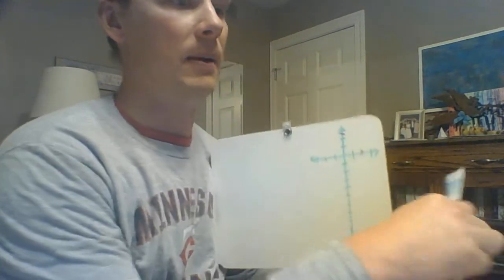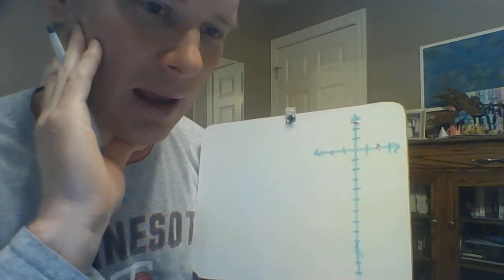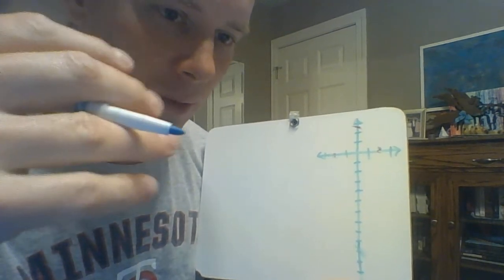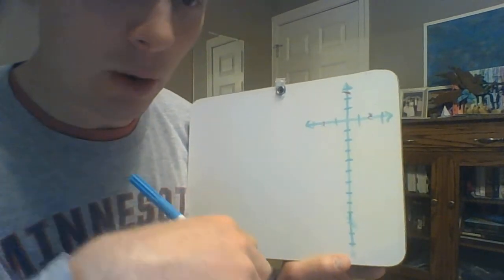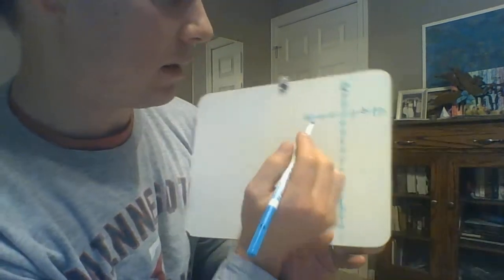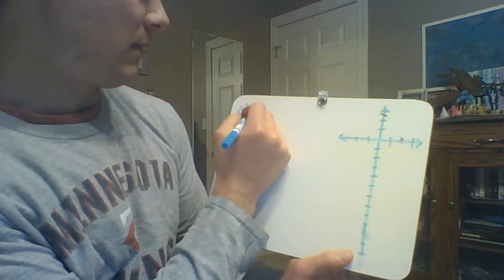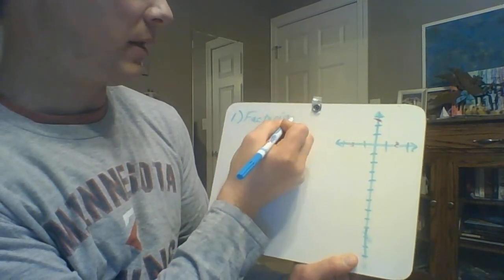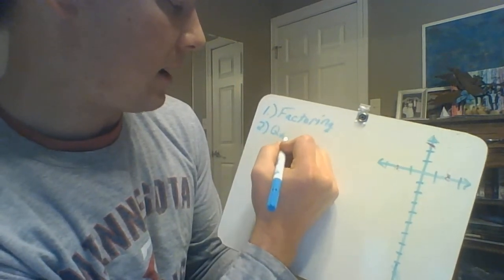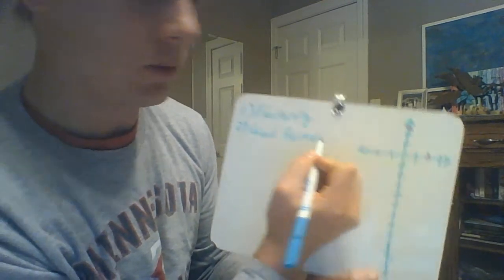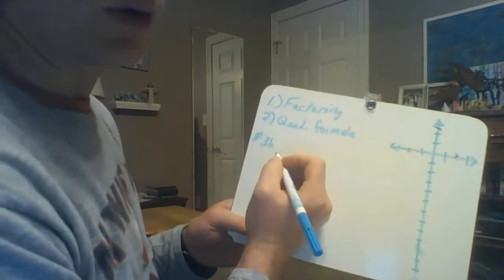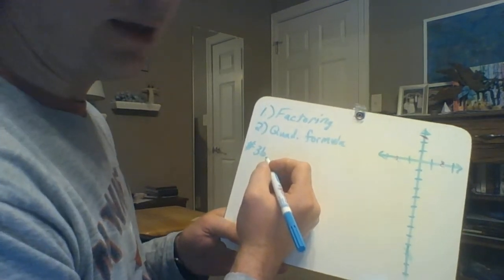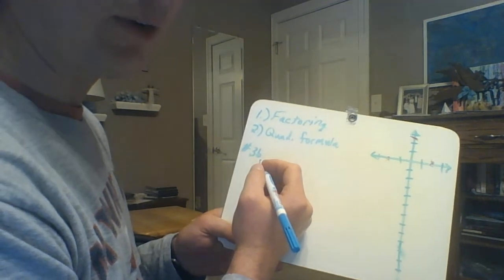We're going to begin by looking at factoring. I've also posted some notes from previous years so you can see some of the work and practice problems. There are really two methods to find x-intercepts: factoring and the quadratic formula. We'll do factoring first. I'm going to work through number 3b from the lesson 8.4 problem set, which says to factor the quadratic function and then graph it.